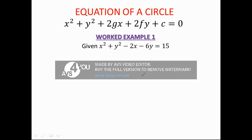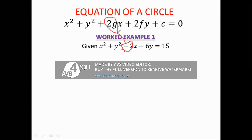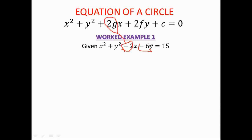Now, in this equation, the negative 2 is represented by 2g. Equate 2g to negative 2 and solve for g. Then equate 2f to negative 6 and solve for f — tell me what values you get.